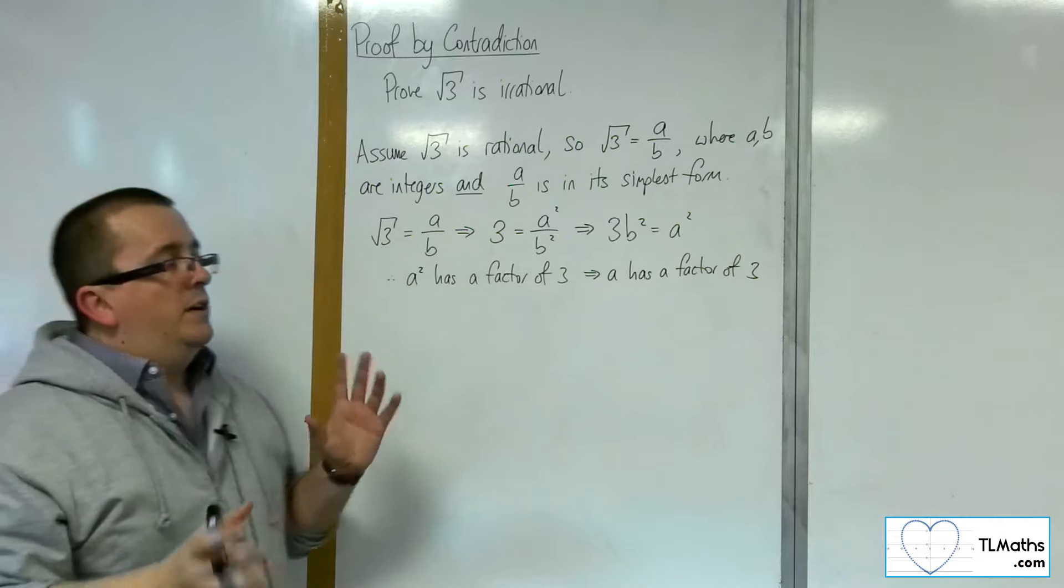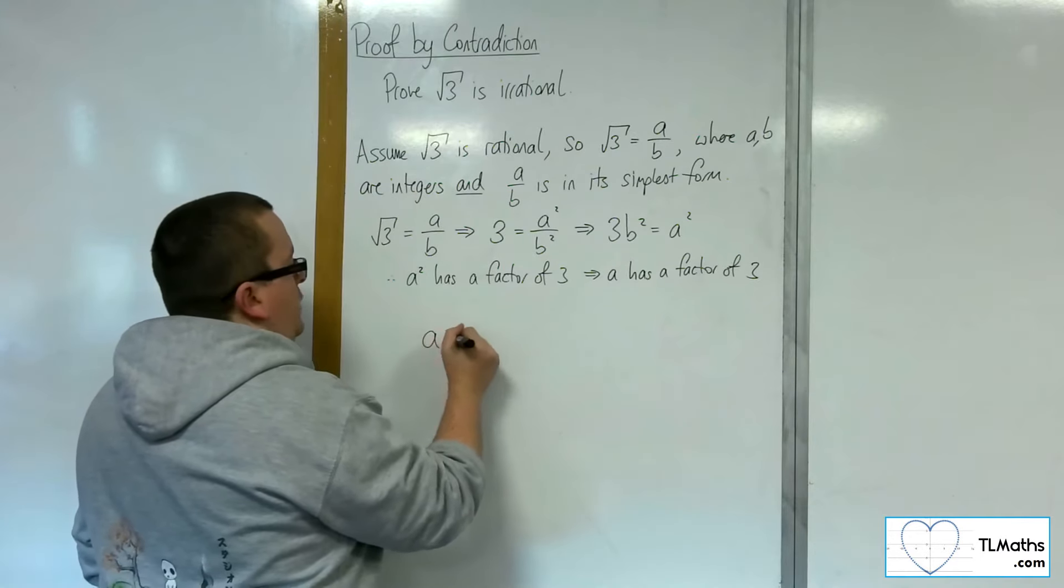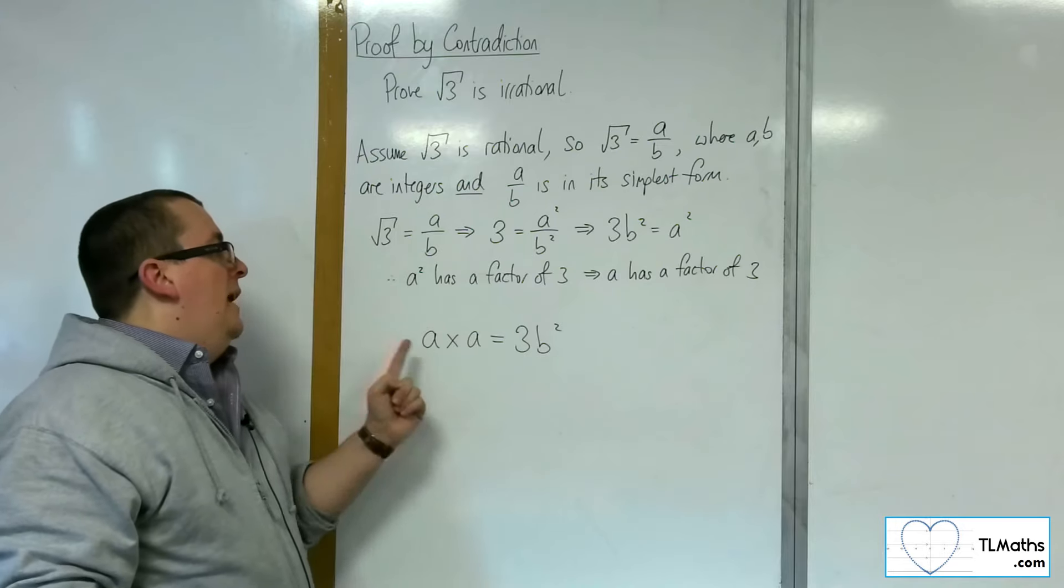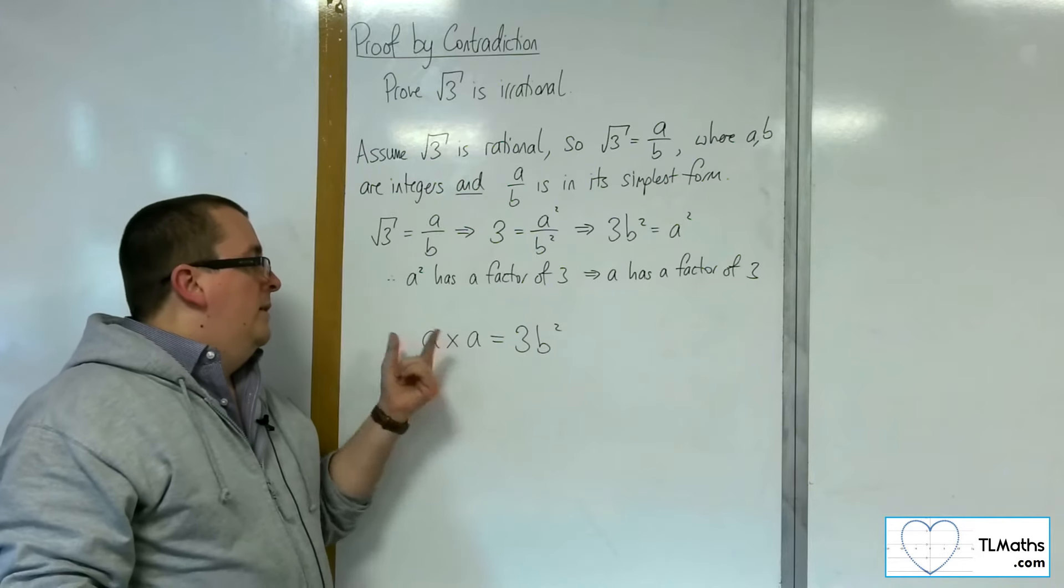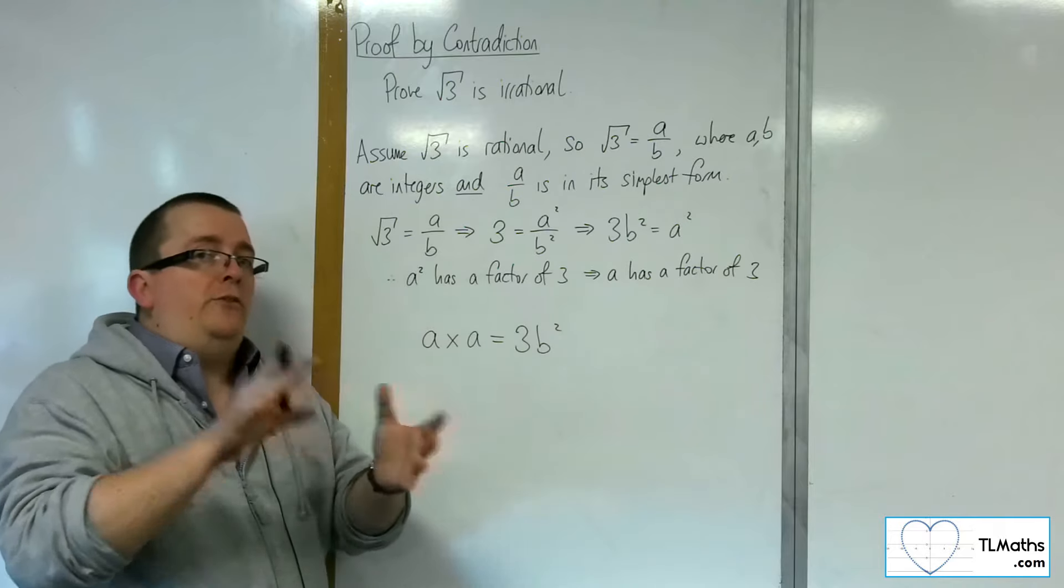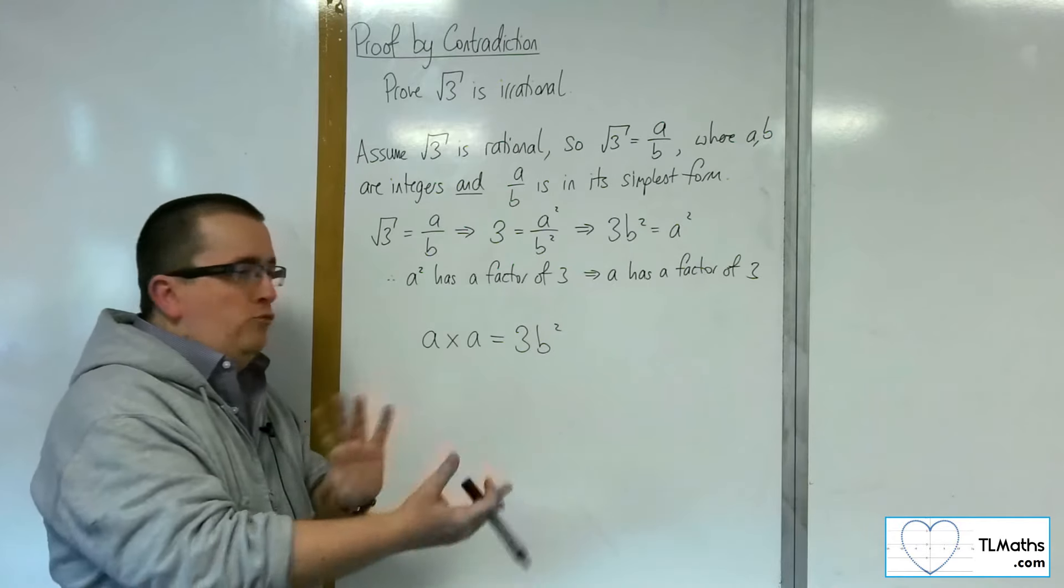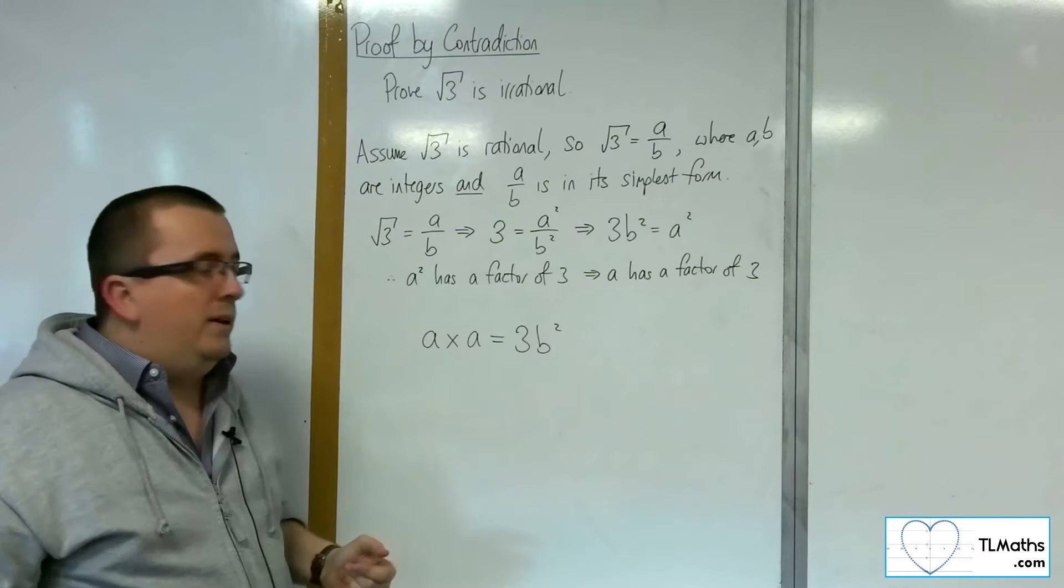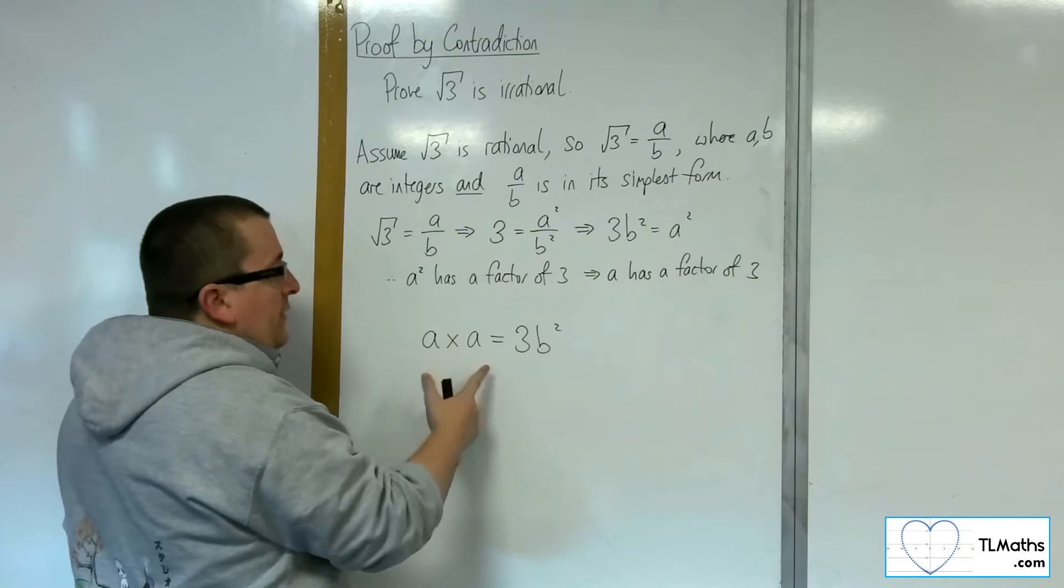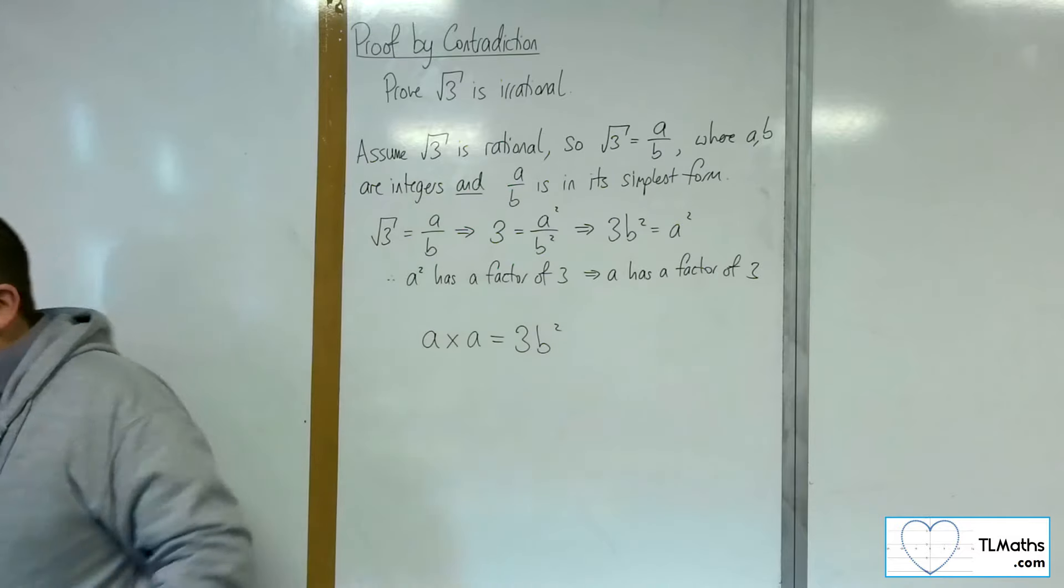Now, some people at this stage aren't very convinced that that has to be the case. But if you think about this logically, you've got a times a is 3 lots of b squared. Now, if a times a is 3 lots of b squared, then by the very nature of prime factorization, you would be able to write a as a product of its prime factors, and also a as a product of its prime factors. There are no two numbers, other numbers rather than 1 and 3, that multiply together and make 3, because 3 is a prime number. So that means that 3 must be a factor of one of these. And if it's a factor of one of them, it's a factor of both, by the very nature of it being a times a. So that's why a has to have that factor of 3.